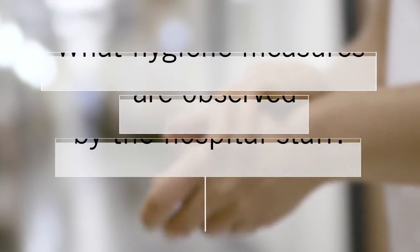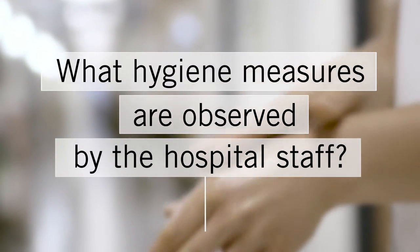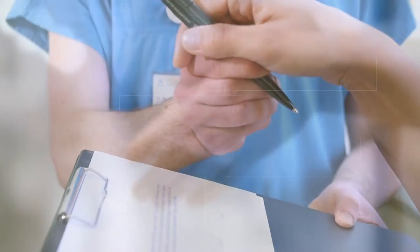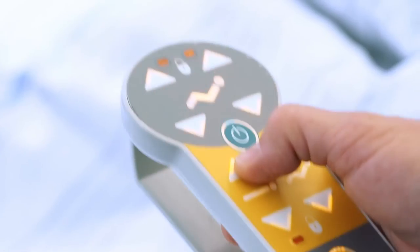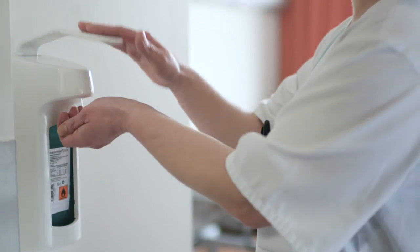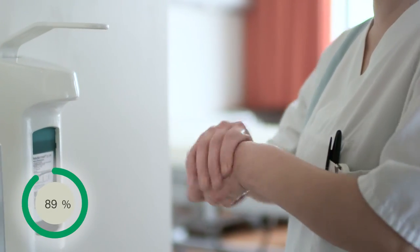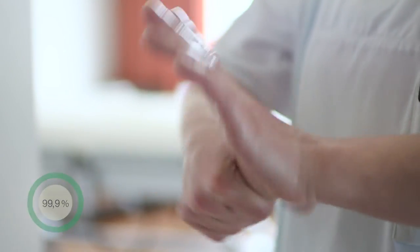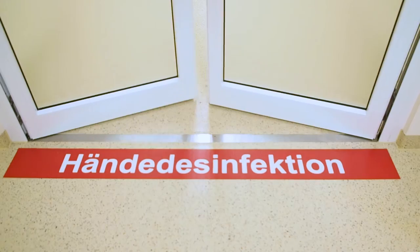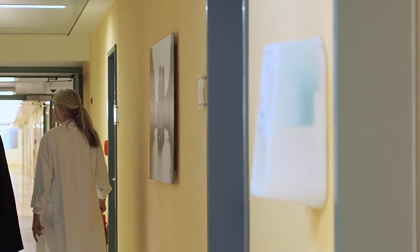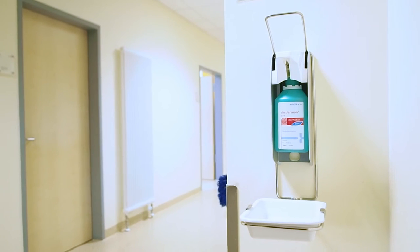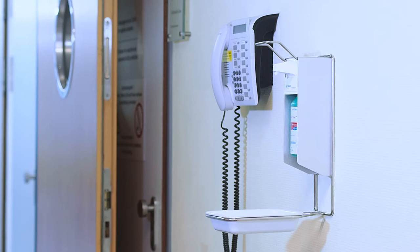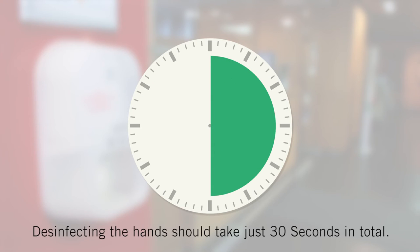What hygiene measures are observed by the hospital staff? The hands are major carriers of germs. Therefore, the most important hygiene measure is disinfection of the hands. The disinfectant solution reliably kills 99.9% of all germs if used carefully. Both patients and visitors should regularly disinfect their hands in the hospital. Dispensers are provided in many locations. It is vital to use the correct technique when doing this.